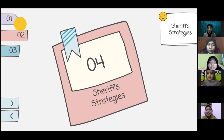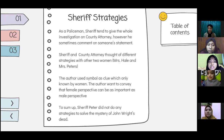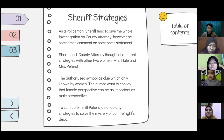I would like to explain about the Sheriff's strategies. As a policeman, the Sheriff tends to give the whole investigation to the county attorney, but sometimes comments on someone's statement. The Sheriff and county attorney thought of different strategies compared to the two women — Mrs. Hale and Mrs. Peters — because the women use symbols as clues which are only recognized by women. This conveys that a female perspective can be as important as a male perspective. To sum up, Sheriff Peters didn't do many strategies to solve the mystery of John Wright's death.